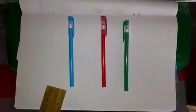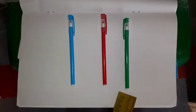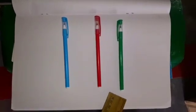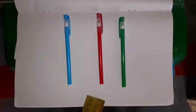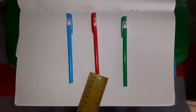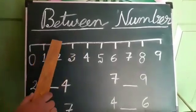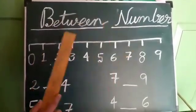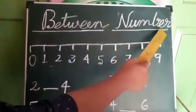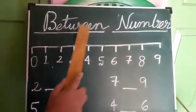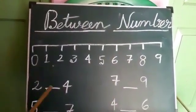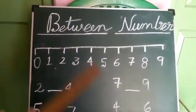If I call one as before number and the other as after number, then this red pen — which is in the middle — we call it the between number. Now children, look here. I have written here 'between number': B-E-T-W-E-E-N, between. N-U-M-B-E-R, number. In between number, we are always trying to find the middle number of any two given numbers.